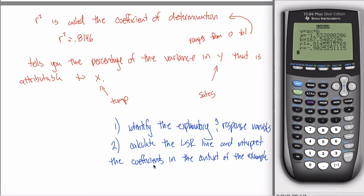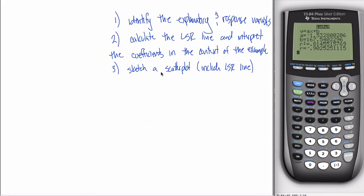Interpret those coefficients in context: a tells you that for every one-degree increase in temperature, you'd sell one and a half fewer cups of hot chocolate. And b tells you how many cups you'd expect to sell — 167.5 in this case — if it were zero degrees out. Third: sketch a scatter plot. I want you to include the LSR line on your scatter plot, which is why I ask for the LSR line first. Make sure you can make scatter plots out of your calculator under the Stat Plot menu, and include your LSR line by typing it into the Y equals screen.